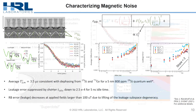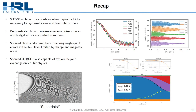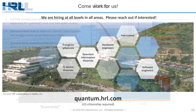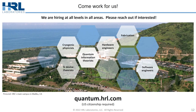So to recap: SLEDGE affords us an architecture that we can do reproducible one and two qubit studies. I've demonstrated how we can measure various noise sources and budget the errors associated with them, and shown that our error at the 1e-3 level is limited by charge and magnetic noise in the device. If you are a US citizen and you find this interesting, I encourage you to come talk to us — we're hiring across the board. Thank you.